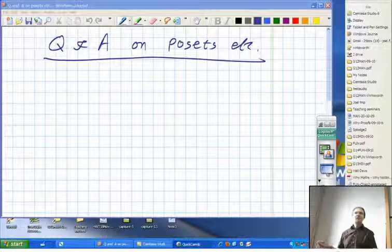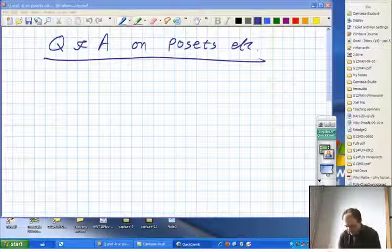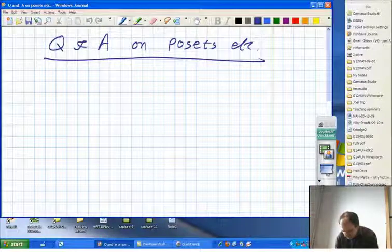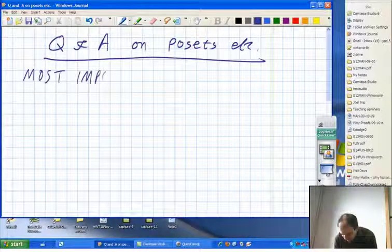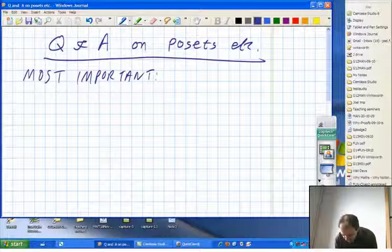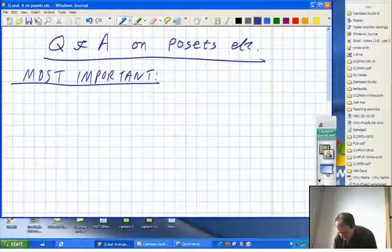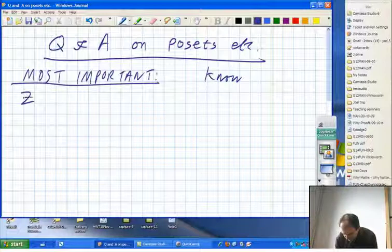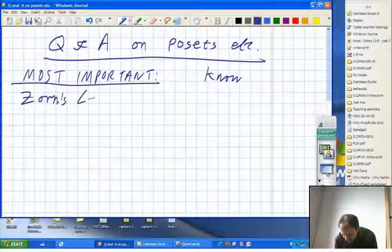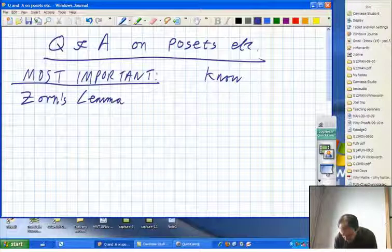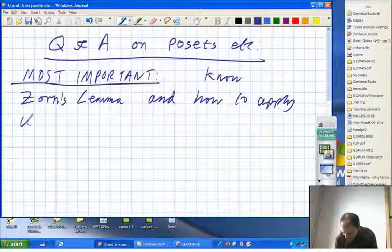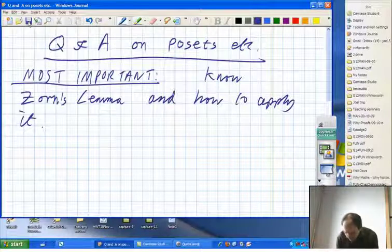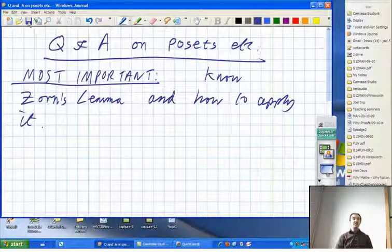So there's a lot of stuff in here about all these different conditions and how they're equivalent to each other. But I think that the most important thing is to know Zorn's Lemma and how to apply it. Because that will come in in lots of different proofs in this module.